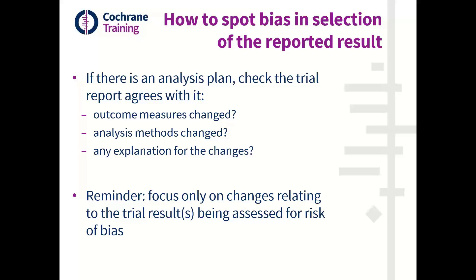When doing this assessment, you're really only focusing on any changes or discrepancies that relate to the trial results being assessed for risk of bias. So if you're assessing risk of bias in the results for pain that has been made available, and that's the only result you're going to look at, it doesn't really matter if the authors have made a lot of changes to the analysis for, say, anxiety — because if you're not assessing that domain, then it's not going to have an impact on your risk of bias assessment.